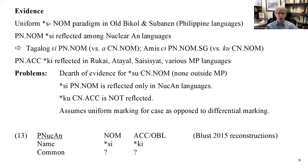To summarize, what is supported by the data in Blust's reconstructions is the opposite of what was supported in Ross's reconstructions. For Blust, he does a much better job with the name and person marking: there's ample evidence in Nuclear Austronesian languages for C nominative. And of course the ki object marking I'm going to propose today should be reconstructed to Proto-Austronesian. Interestingly, C can be reconstructed only for Proto-Nuclear Austronesian, which is ironic given that Blust does not adopt this subgrouping hypothesis himself.